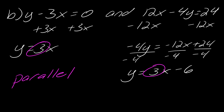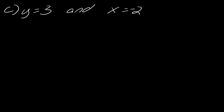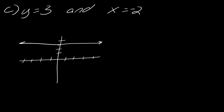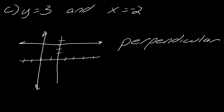Let's throw a curveball: what about y equals three and x equals negative two? These are not in slope-intercept form — they are actually a horizontal and a vertical line. If you're unsure, you can always just graph them. Y equals three is a horizontal line, and x equals negative two is a vertical line. Looking at the sketch, you can see they form a 90-degree angle, so these lines are perpendicular. A slightly different technique is needed for horizontal and vertical lines.